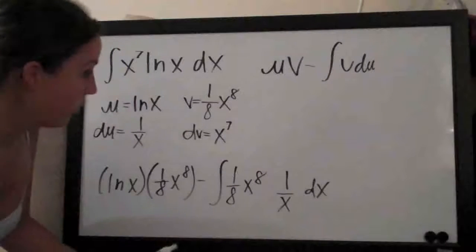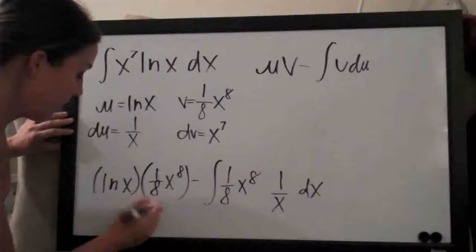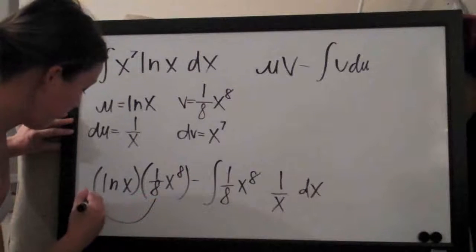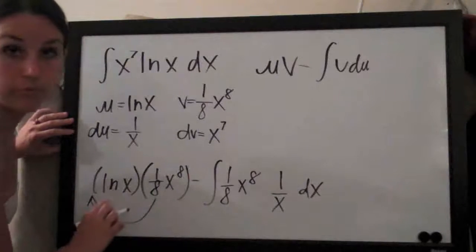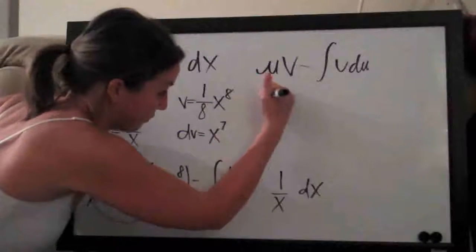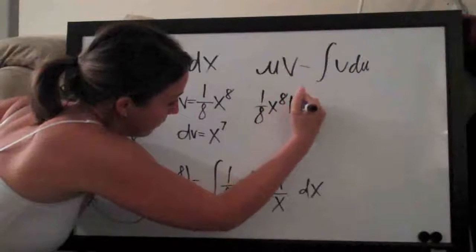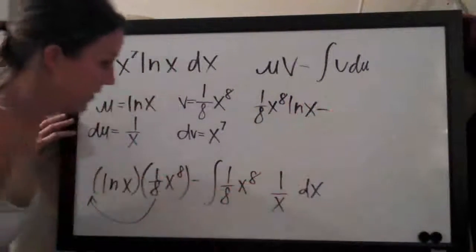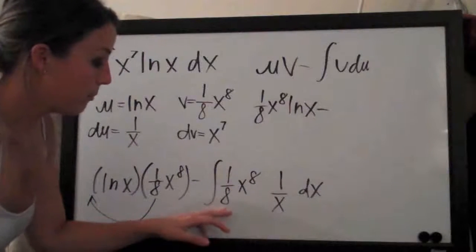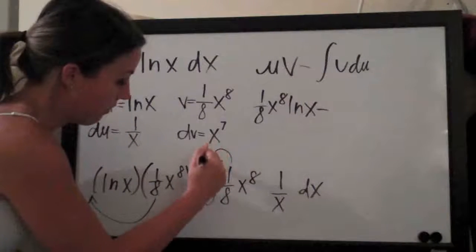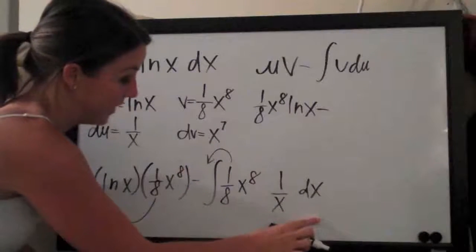So now that we've done that, we can go ahead and simplify somewhat. I'm going to bring one eighth out in front here as the coefficient. I'm also going to bring out the x to the eighth because that should go in front of the natural log of x. So we'll have one eighth x to the eighth ln of x minus, and then for the integral, we can bring one eighth out in front of the integral because it's a coefficient and everything inside is multiplied together.